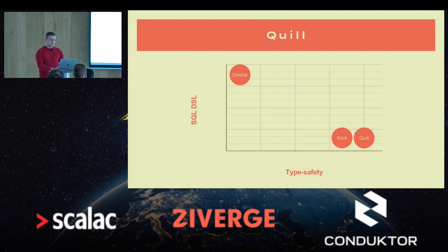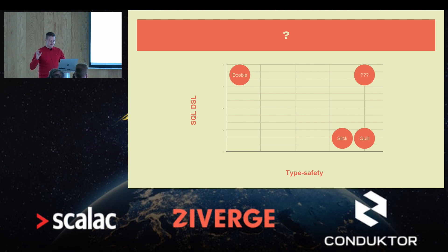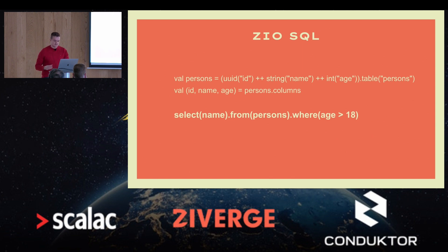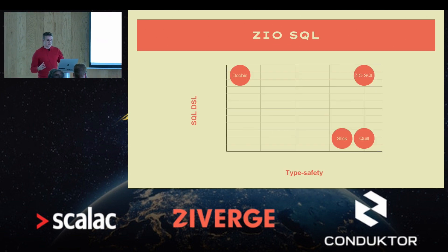So let's think about where we'd like to end up — somewhere in the top right corner of that graph. Taking a quick look at ZioSQL, we can see that it actually looks like SQL and is very typesafe. So if you care about having typesafe SQL in Scala, ZioSQL might be a great library for you and your team.